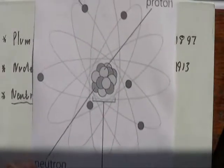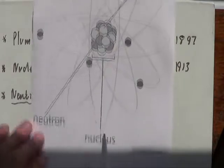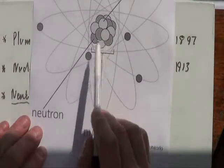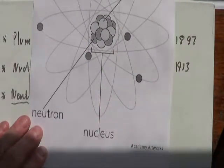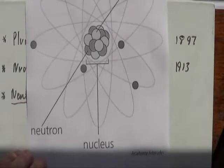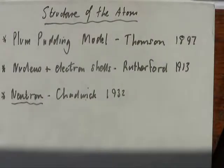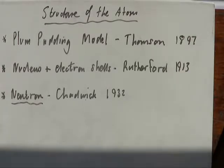Our nucleus obviously contains the protons and the neutrons. Building on from that, we need to be able to look at the structure of an atom and the information given to us in the periodic table, and to work out from that how many protons, how many neutrons, and how many electrons are actually in it.